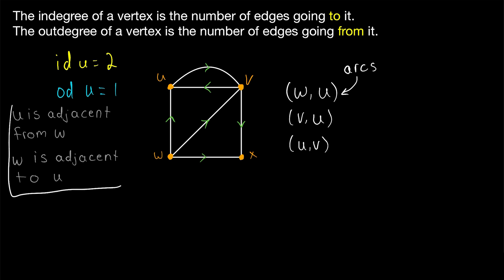And remember we have this language to talk about adjacency in digraphs. We say that U is adjacent from W, because there's an arc going from W to U. But we say that W is adjacent to U, because there's an arc going from W to U. On the other hand, U is adjacent to V, but U is also adjacent from V, which is the same as saying that V is adjacent to U.